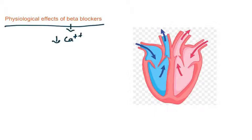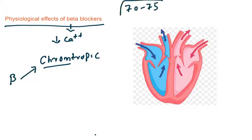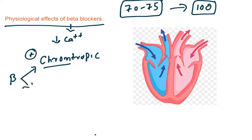Regarding physiological effects: beta blockers cause reduced calcium levels. Beta receptors on the heart increase calcium, which increases heart rate — this is known as the chronotropic effect. Normally the heart rate is 70 to 75 beats per minute; when noradrenaline acts on beta receptors it increases to 100 beats per minute. This is called positive chronotropy. Beta receptor activation also causes a positive inotropic effect — increased force of contraction.